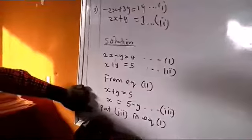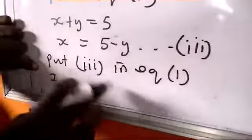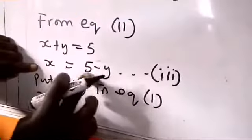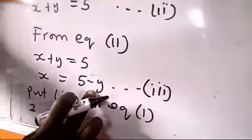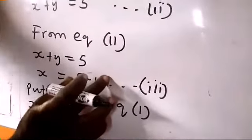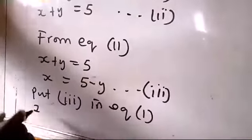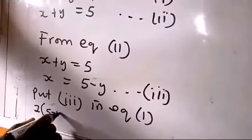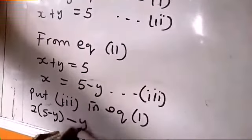Now, this is going to give us, we have 2x. What's our x here? 5 - y. So, instead of writing this x, I'm going to write 2x, that is, bracket, 5 - y, minus y, equals to 4. And that's what I'm going to treat.